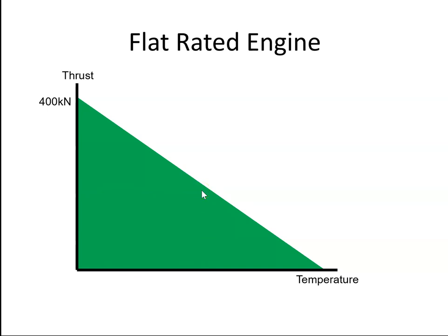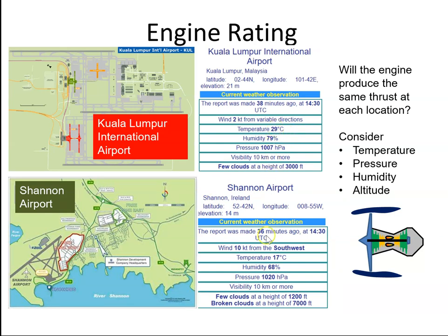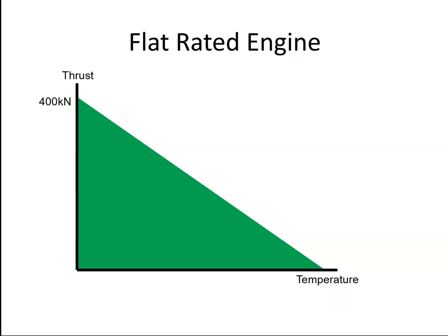So take the example of Kuala Lumpur. It was at a temperature of 29, where Shannon was at 17. So 29 might be somewhere here. Let's say here. I'm just going to switch on my pen. So if it was, say here, that's the thrust we got. Where if it was Shannon, we might get something like that. So we get a little bit more thrust.